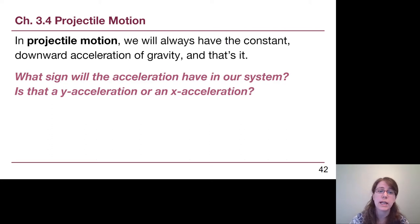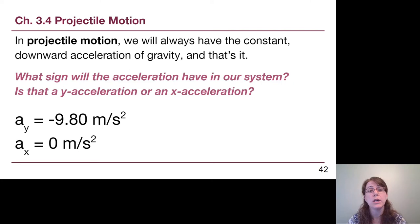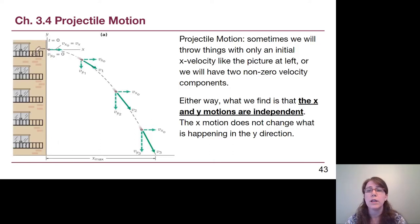Gravity, in the way that we set up our problems, we choose up to be positive and down to be negative, which means it has a negative sign. And because it's an up and down motion and not a side-to-side motion, it is in the y direction. So on our slide here, we have the official accelerations for all of projectile motion. We won't ever be asking for an acceleration in this section because it's always going to be these two for the problems in Physics 125.